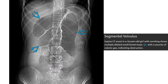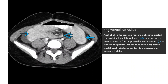CT scout view in a 16-year-old boy with vomiting shows multiple dilated small bowel loops with paucity of colonic gas, indicating obstruction. Contrast-enhanced CT in the same patient shows a dilated contrast-filled small bowel loop tapering into a twisted whirl of decompressed bowel and vessels.